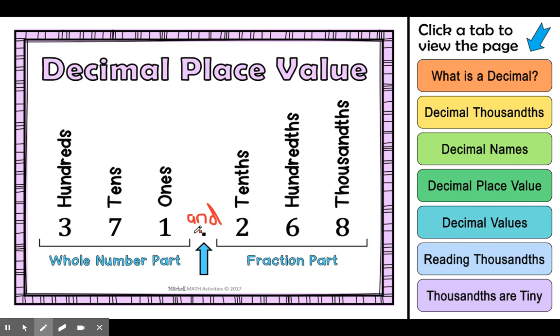371 and. Now here I have two tenths, six hundredths, and eight thousandths. I'm going to read that by reading this whole group of digits together. 268. And then say the place value word of your last place value position. 268 thousandths.